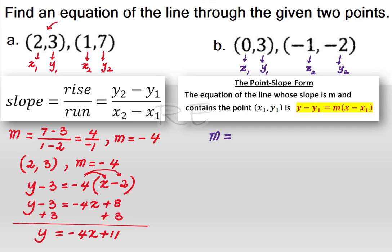The slope will be negative 2 minus 3 divided by negative 1 minus 0. Negative 2 plus negative 3 is negative 5. Negative 5 divided by negative 1 will be positive 5. A negative over a negative is a positive.